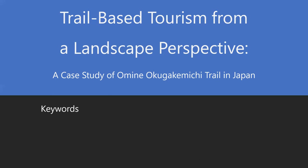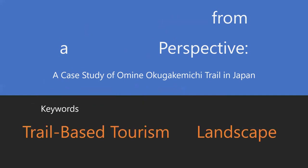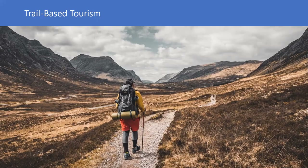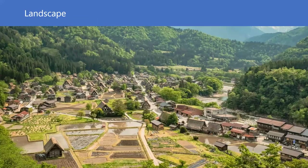You can choose two keywords from this title. The first is trail-based tourism, and the other is landscape. Trail-based tourism is literally recreation based on trails — for example, trekking, hiking, mountaineering, backpacking, cycling, and so on are typical examples. The next keyword, landscape, means scenery, view, or site.